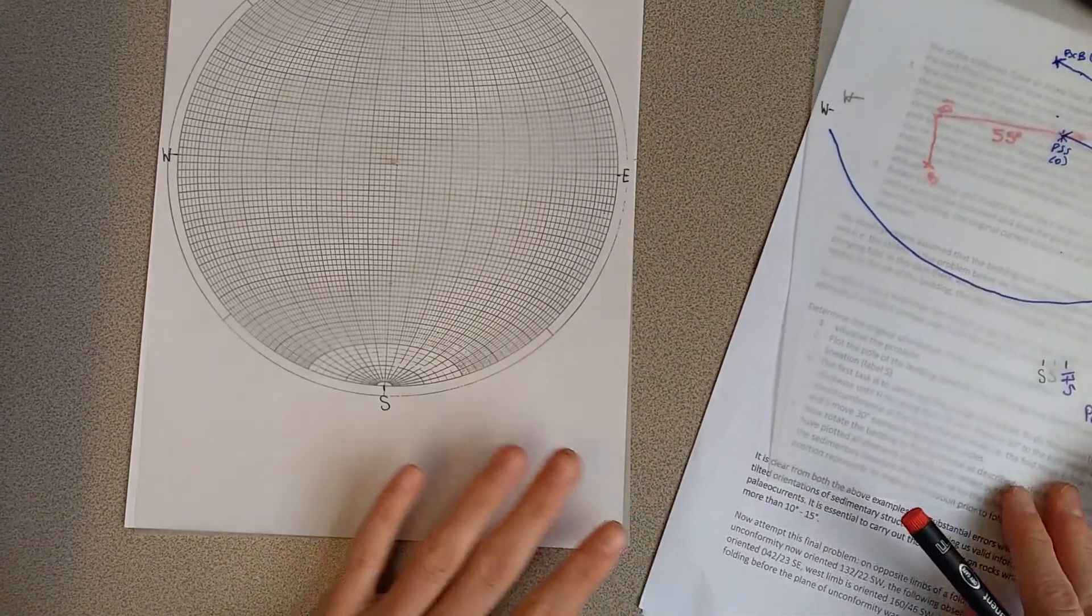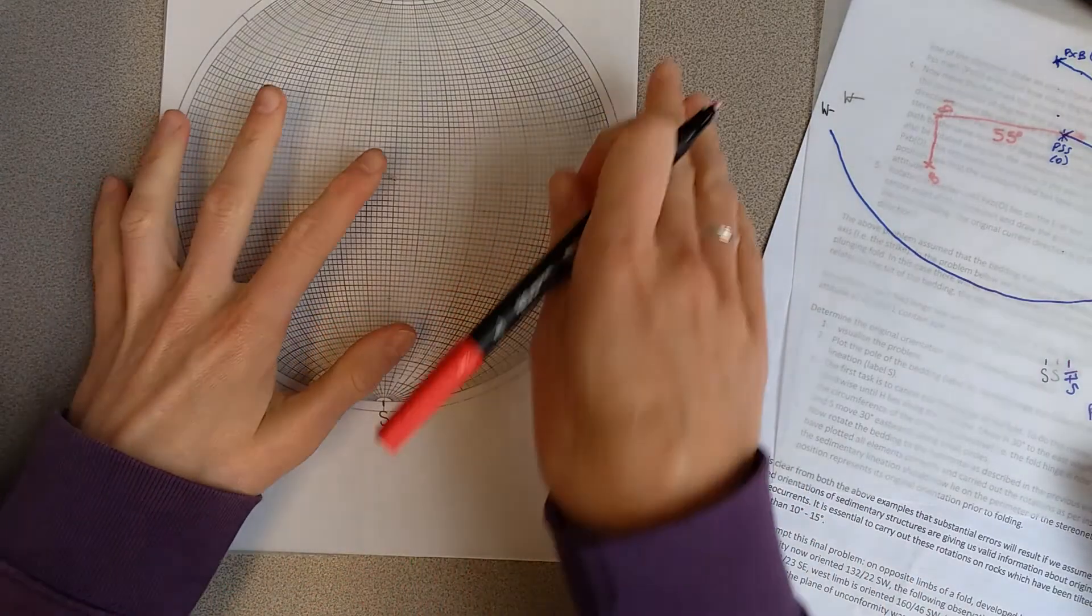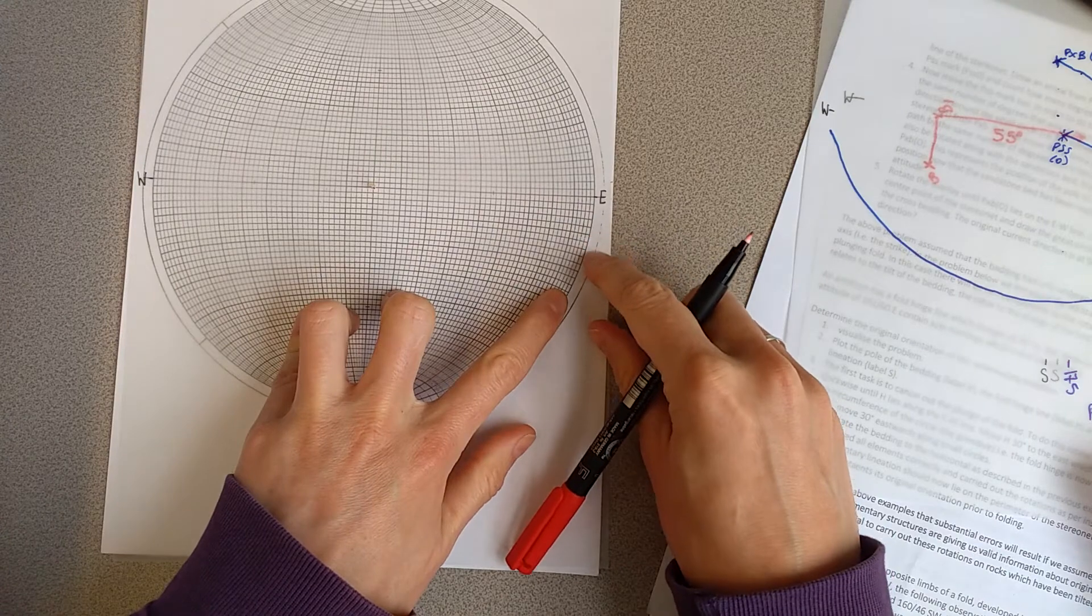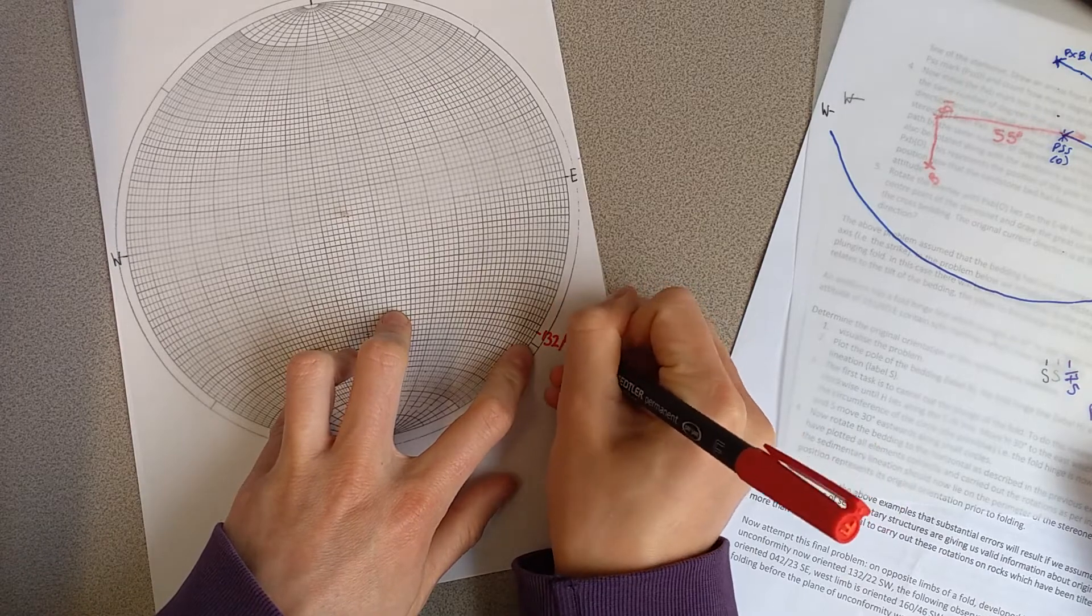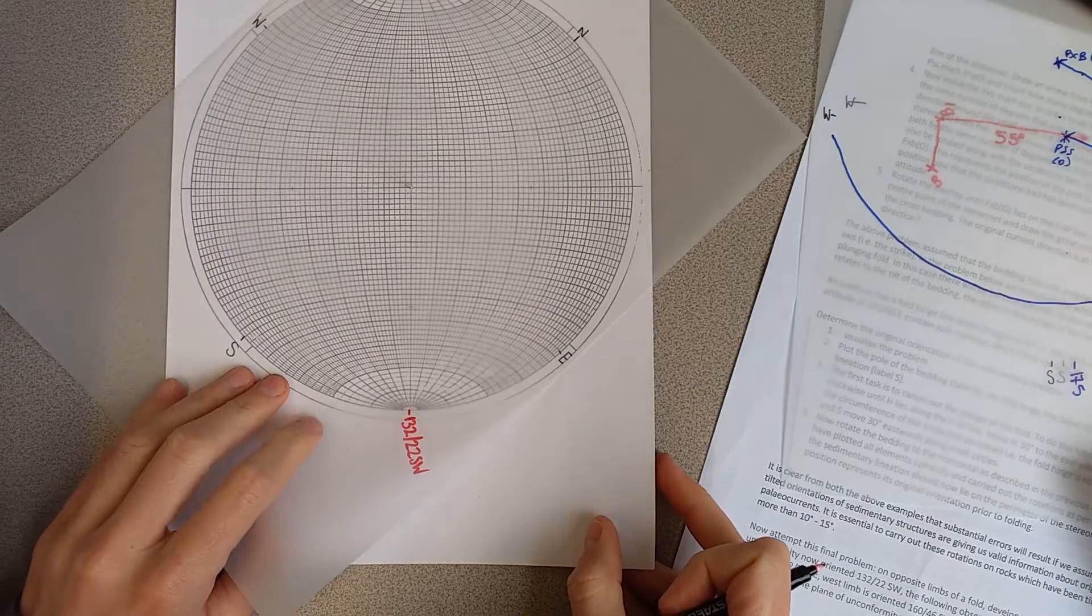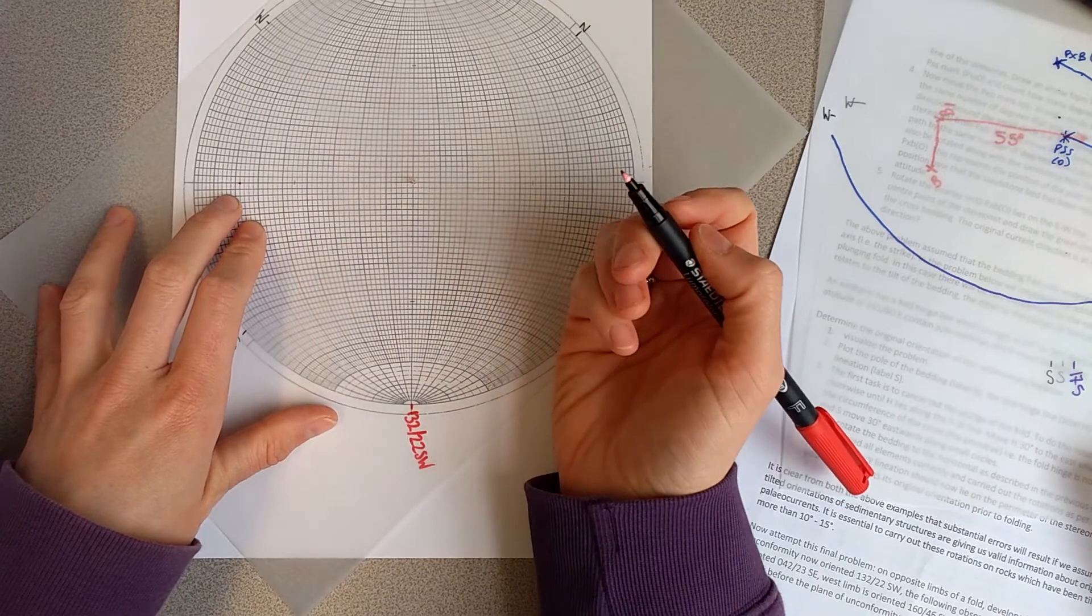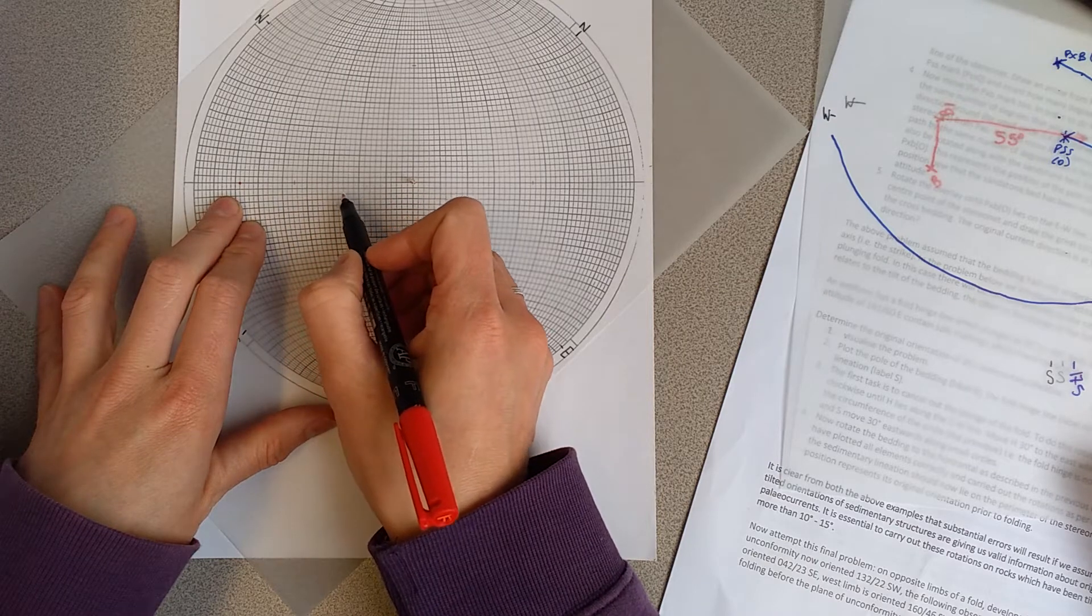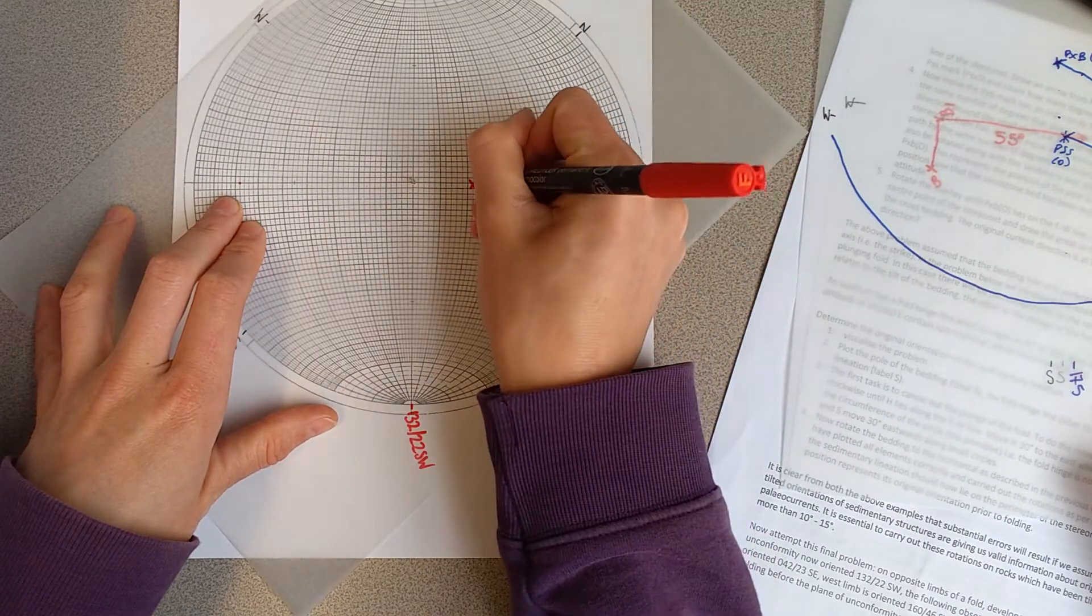The first thing to do is plot the poles to all the planes. The unconformity is 132, 22 southwest, so let's do that first. Rotate that down here—southwest is now on this side. We're going to count in 22, and then go 90 more: 10, 20, 30, 40, 60, 70, 80, 90. This is the pole of our unconformity.